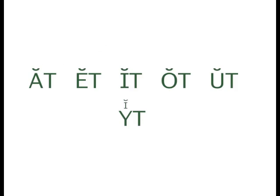We'll also look at a rule: syllables and words that end in a consonant will have their short sound. And Y will have its sound of I. So these syllables will be: at, et, it, ot, ut, it.